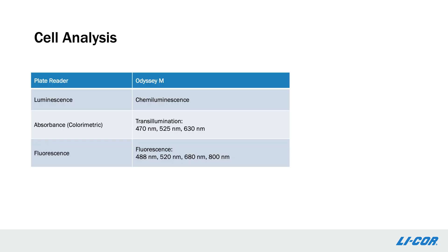Cell analysis assays are detected either by luminescence, absorbance, or fluorescence. As shown in this table, Odyssey-M has comparable channels for each of these detection modes. While the transillumination and fluorescence channels on Odyssey-M are static, they are well-suited to many commercial absorbance and fluorescence-based detection kits. In the next few slides, I'll show examples of cell viability assays in each detection mode on Odyssey-M.